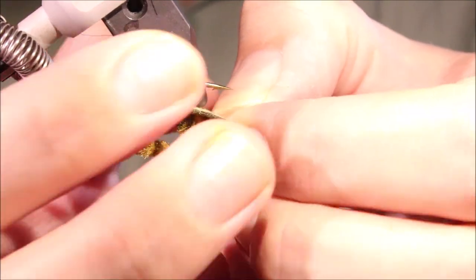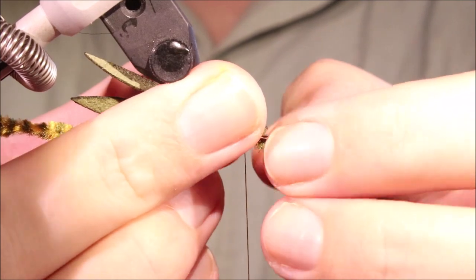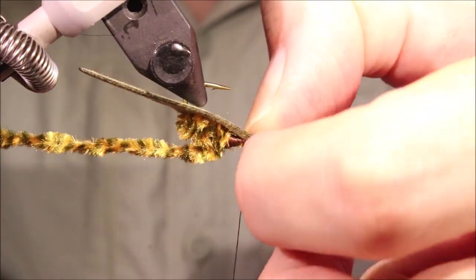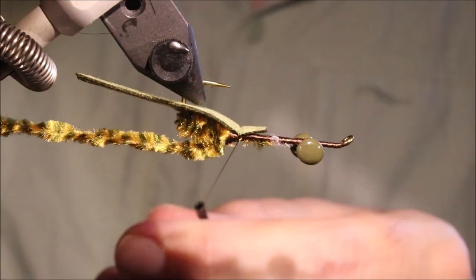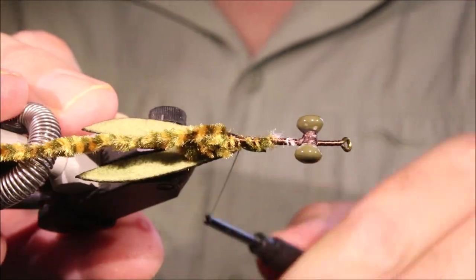Now, pull it down, make sure it's straight, parallel to the hook, take a wrap over to catch it, see how you're sitting.